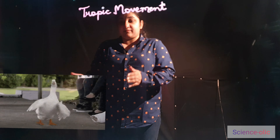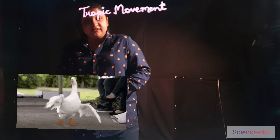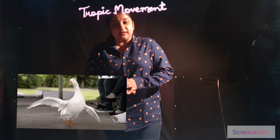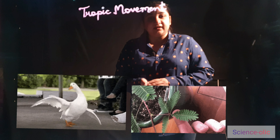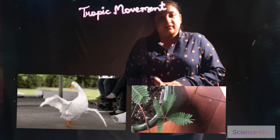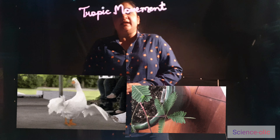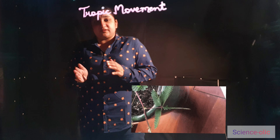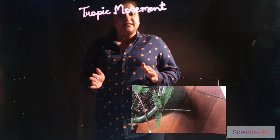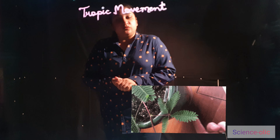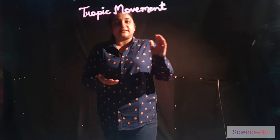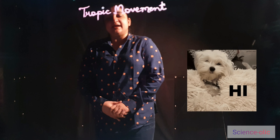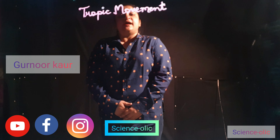In this image you are seeing animals moving from one place to another. Similarly, in another image you are seeing a plant responding towards the light. These are movements. A plant responding to a sudden change in environment or to a sudden change in stimulus is known as tropic movement.